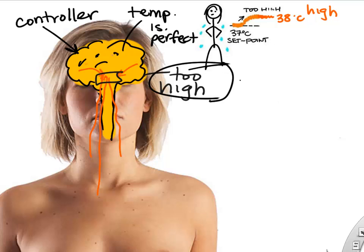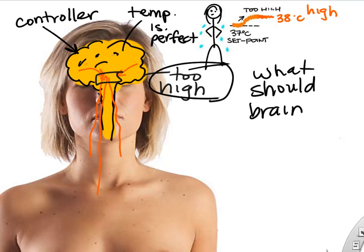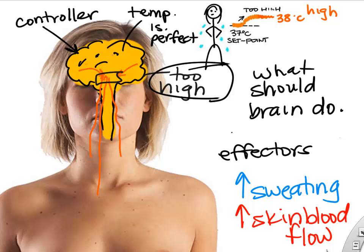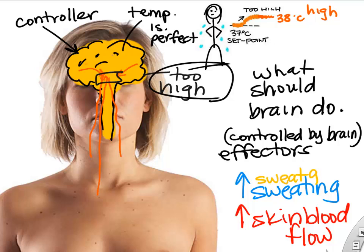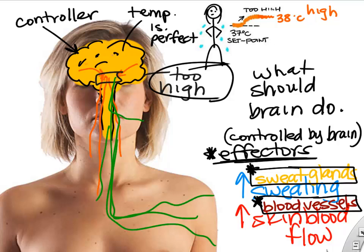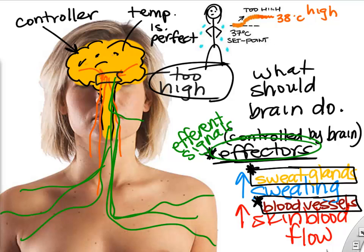The brain decides the temperature is too high and wants to bring it back down. So the brain sends out signals that cause increased sweating and increased blood flow to the skin. The brain sends these signals out to things called effectors — in this case, your sweat glands and blood vessels. Effectors are organs or tissues controlled by the brain that can change and bring your temperature back down. The signals sent from the brain out to effectors are called efferent signals.